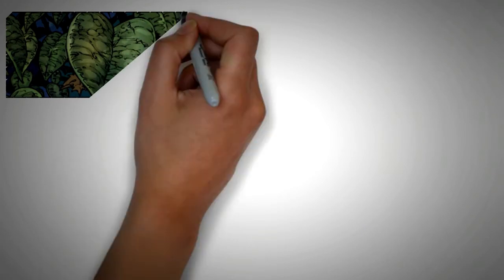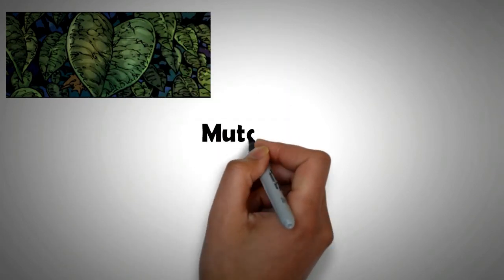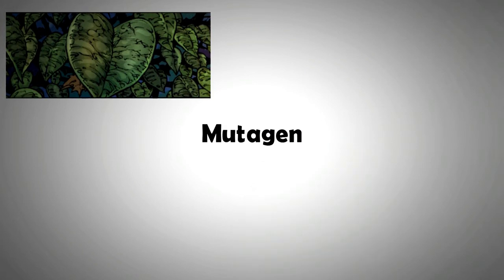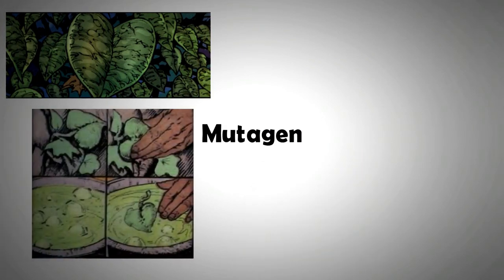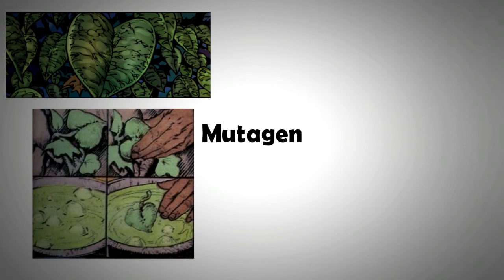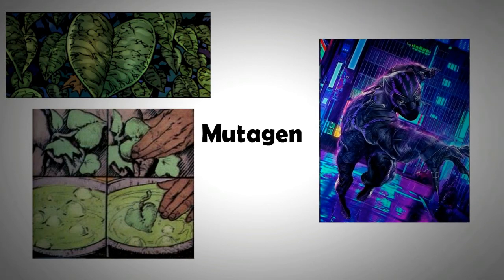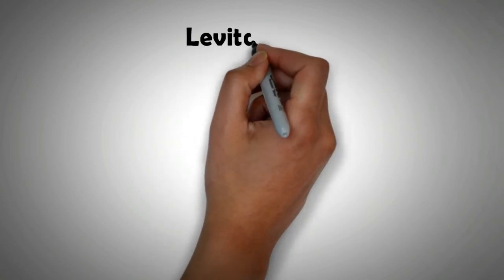The other characteristic of Vibranium shown in the Black Panther movie is its effect as a mutagen. Vibranium radiation permeates through much of Wakanda's flora and fauna. However, one property that is most remarkable in Vibranium is its ability to levitate.